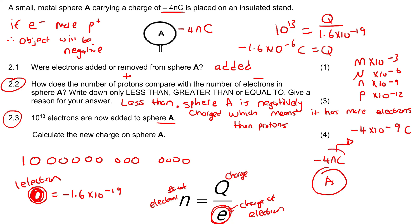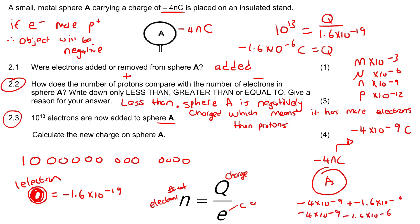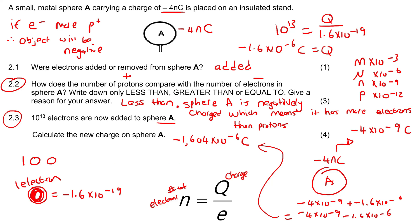So imagine you have the existing charge of negative 4 times 10 to the negative 9 coulombs, and then you add even more negative charge to it. You add negative 1.6 times 10 to the negative 6 coulombs. Adding those together, you end up with a final charge of negative 1,604 times 10 to the negative 6 coulombs. Since times 10 to the minus 6 is microcoulombs, you could also write this as minus 1,604 microcoulombs. Both of those are correct.